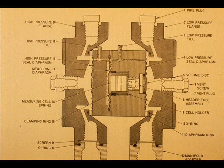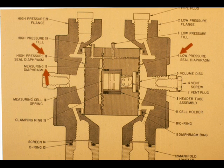This is a schematic of the Ferratrack differential pressure transmitter. The high-pressure seal diaphragm, 18, the low-pressure seal diaphragm, 4, and the measuring diaphragm, 17, are identified here.